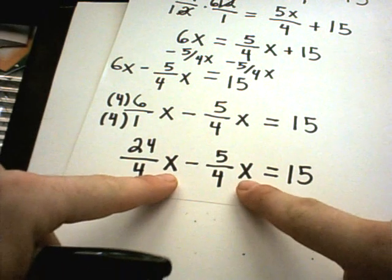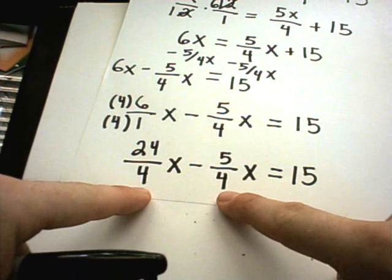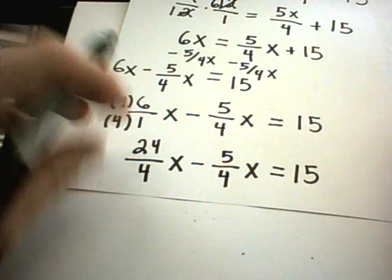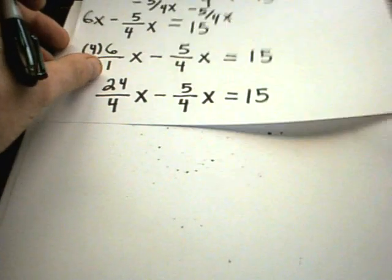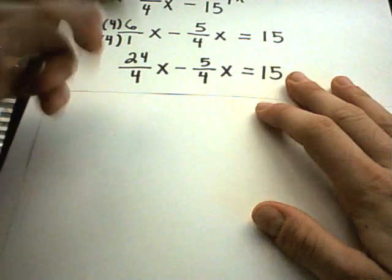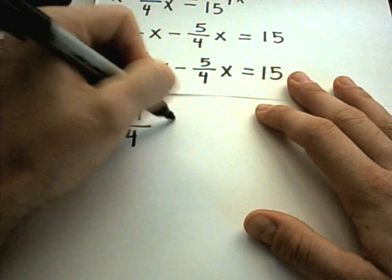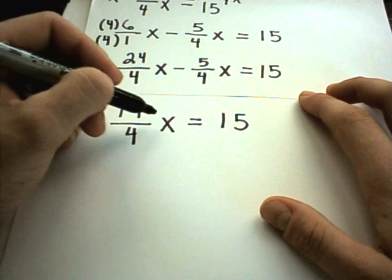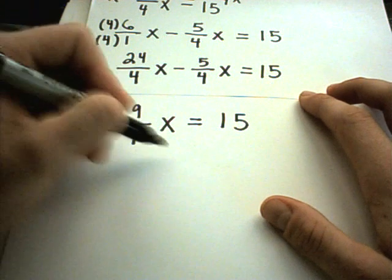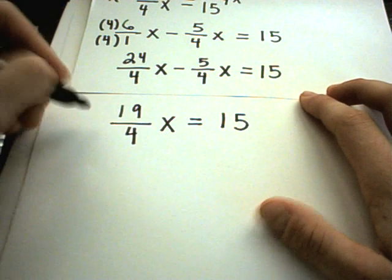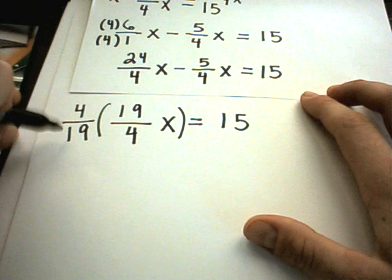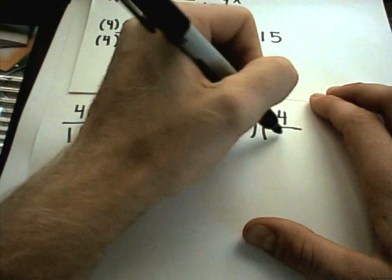And again, I have like terms. I've got an x to the first and an x to the first. I've got common denominators. So I can just do the arithmetic across the top. You can think about this as being 24x minus 5x. Well, 24 minus 5, that's going to give us 19x. Or you could just write it off to the side. You'll get 19 over 4x equals 15. And now I've almost got the solution to my problem. I want the x by itself. So I could divide both sides by 19 fourths. An equivalent way is to multiply the left side by 4 over 19. But if I do it to the left side, you've got to do it to the right side as well. So 4 over 19.